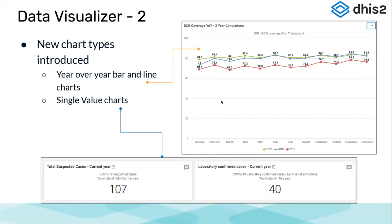New chart types were introduced based on requirements from ministries of health and partner organizations — including year-over-year bar and line charts to see performance of a particular indicator month by month over a period of years, so you can compare performance and trends year over year on a monthly basis. There were also requirements for single value charts where you could see a summary of data in both raw and cumulative forms. This has been extensively utilized for COVID systems — showing a grid of all identified positive cases, how many recovered, how many are active, how many deaths — giving a quick snapshot view of the latest data.